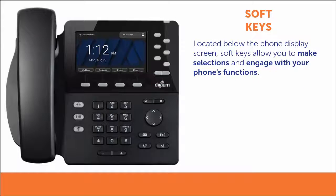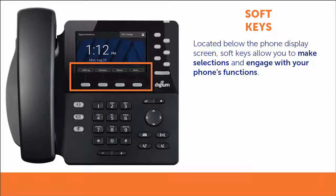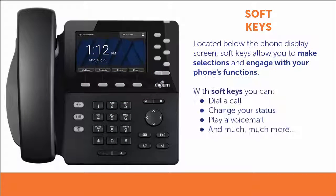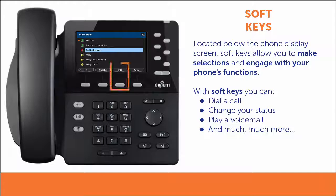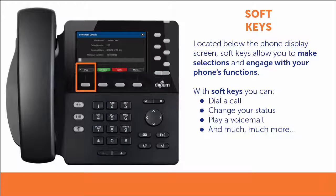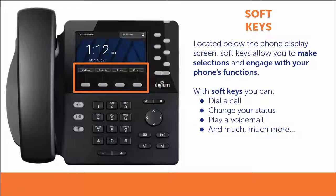Soft keys are located directly below the phone screen. Soft keys allow you to make selections and engage with your phone's functions. The selections and functions of the soft keys will change depending on the state of the phone. You may use them to dial a call, to change your status, to play a voicemail, or any number of things, depending on what you are doing with the phone.